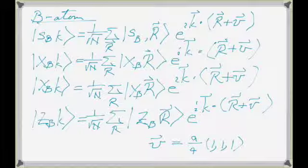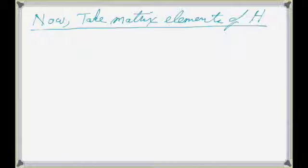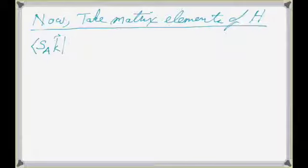In that basis, we now need to calculate the matrix elements of H. Just like we did in 1D, once you have your basis you take the matrix elements of the Hamiltonian and construct your 8×8 matrix. The diagonal ones are always the easiest, but I actually started with an off-diagonal — the easiest off-diagonal, which is between the two S states: S on the A atom and S on the B atom.